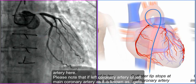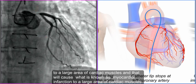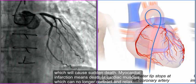Please note that if the left coronary artery — or left main coronary artery as it is known — gets blocked 100% even for a short period of time, it will completely cease blood supply to all of its branches, which supply a large area of cardiac muscle. That will cause what is known as myocardial infarction to a large area of cardiac muscle, which will cause sudden death. Myocardial infarction means death of cardiac muscle.